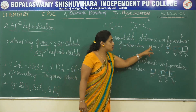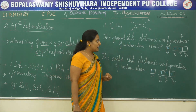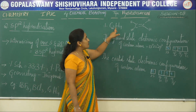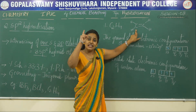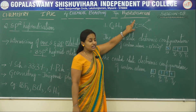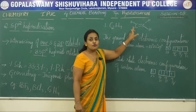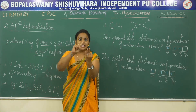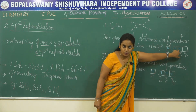The ground state electronic configuration of carbon is 1s2, 2s2, 2p2. There are two half-filled atomic orbitals. Each carbon atom is bonded with two hydrogen atoms and one other carbon atom, giving three bonds per carbon atom. For three bonds, there should be three hybrid orbitals, but there are only two half-filled orbitals.